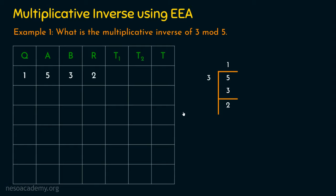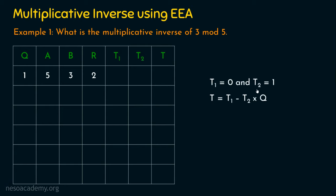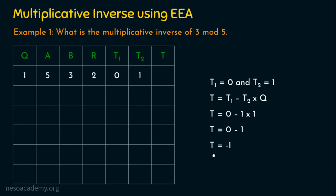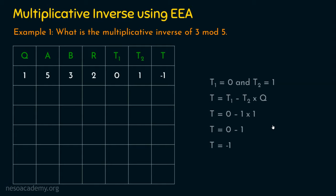For the first row, T1 is equal to 0 and T2 is equal to 1. Using the formula T = T1 − T2 × Q: T1 is 0, T2 is 1, Q is 1, so we get 0 − 1 × 1 = 0 − 1 = −1. T is equal to −1. So the first row is complete.